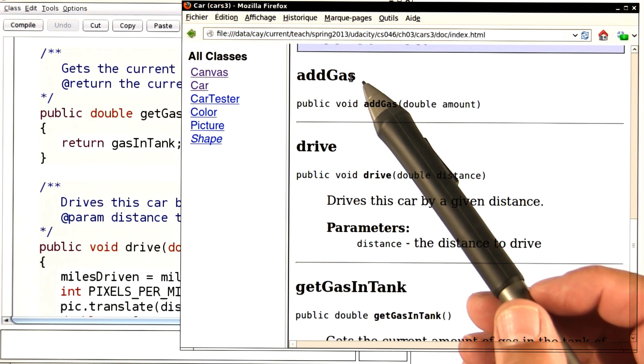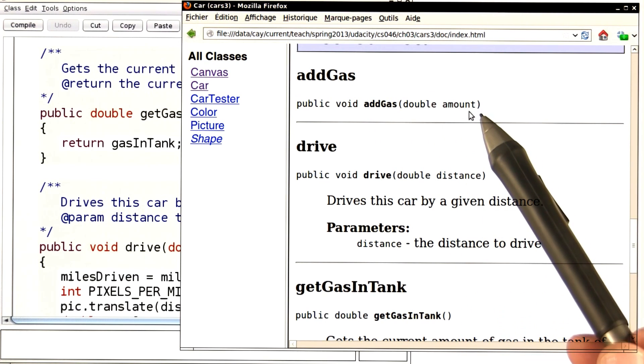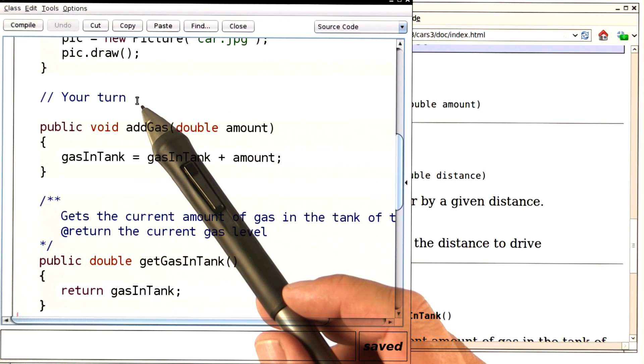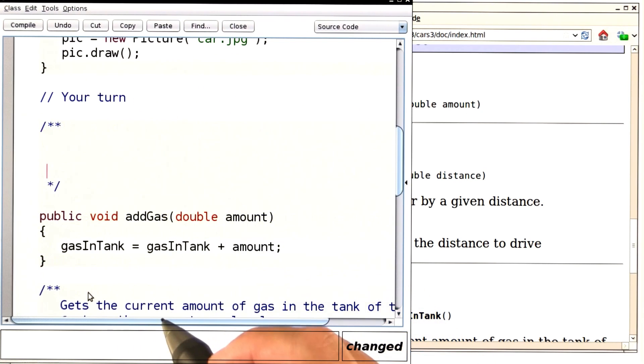Notice that over here, this method looks rather naked. No description. No parameter description. That's because there is no javadoc comment here. So, it's your turn now. Go ahead and put it in.